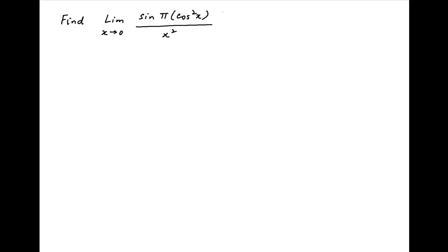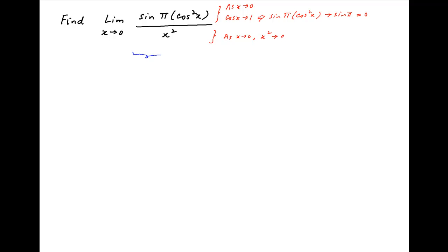We start by evaluating the numerator of the given limit. When x tends to 0, cos x tends to 1, which implies that sin of pi times cos squared x tends to sin pi, which is equal to 0. Similarly, when x tends to 0, the denominator x squared also tends to 0. Therefore, this is indeterminate of the form 0 upon 0.